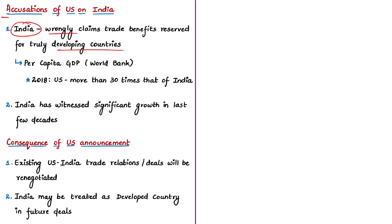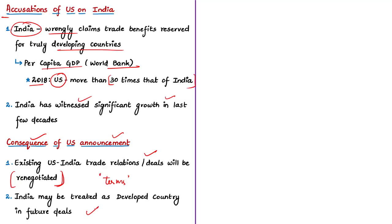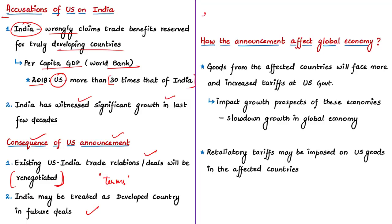Consequences of the recent US announcement include renegotiation of various trade deals between India and the US, with negotiations done considering India as a developed country — applicable for future deals as well. This announcement by the US comes before the scheduled visit of the US President to India on 24th February, making it highly unlikely that any significant trade deals will be signed between the two countries.